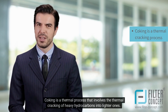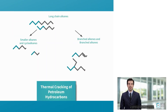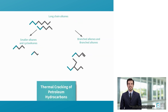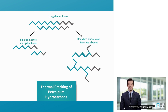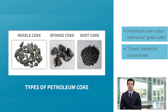Coking is a thermal process that involves the thermal cracking of heavy hydrocarbons into lighter ones. High temperature and pressure are used to turn large molecules of petroleum fractions into smaller molecules. This process is often used to convert heavy hydrocarbons, such as tar and asphalt, into lighter fractions. It is also used to produce coke, which is a solid carbon material used in the production of steel and other industrial materials. Petroleum coke is also referred to as green coke — here, green stands for unprocessed.